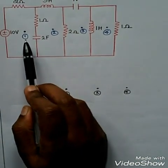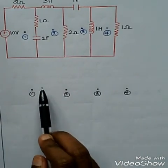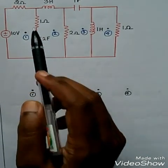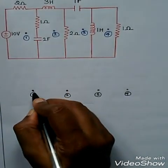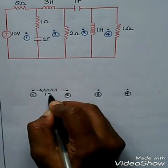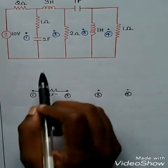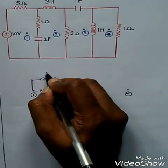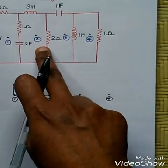The next step is to find the common elements between the meshes. The common elements between meshes 1 and 2 are 1 ohm and 2 farad, connected in series, so they have to be connected in parallel in the dual network. 1 ohm resistance is converted to conductance: 1 mho. The 2 farad capacitance has its dual term as inductance, so it becomes 2 Henry — connected in parallel between nodes 1 and 2.